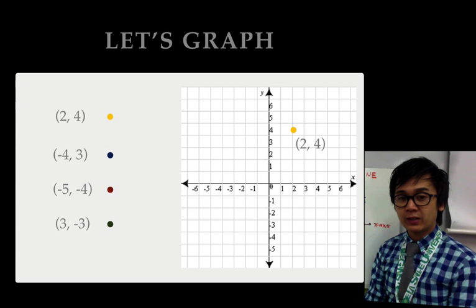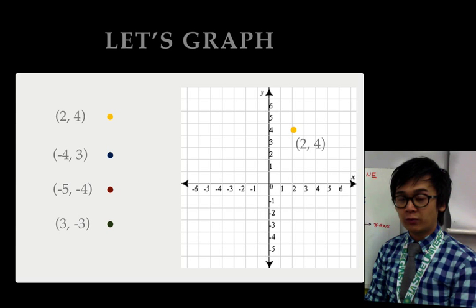For the second point, we have negative 4 and positive 3. So, negative 4 is on the left-hand side of the horizontal line, and positive 3 is on the upper side of our vertical line. So, we have here negative 4 and positive 3, and this is our second point.